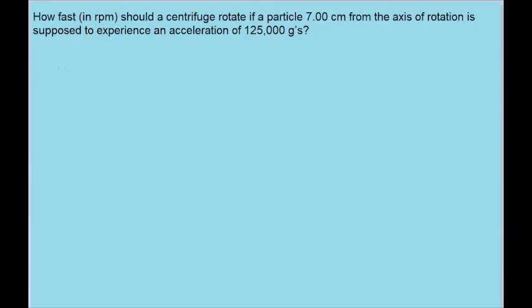In this problem, we want to find the angular speed in revolutions per minute of a centrifuge based on this information that's given to us. Since we're looking at rotational motion here, we'll look at the formula for centripetal acceleration, which is equal to the square of the speed divided by r.